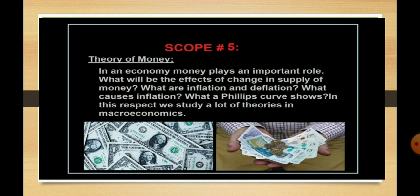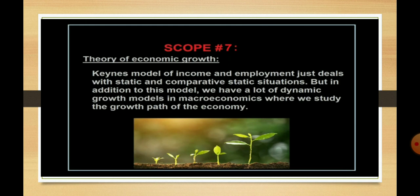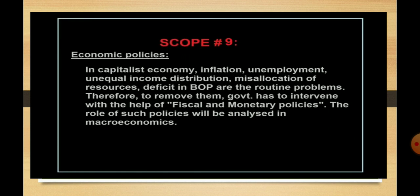In the theory of general price level, we learn about the inflationary gap and deflationary gap. Theory of economic growth: we have dynamic growth models in macroeconomics where we study the growth path of the economy. Theory of business cycle: here we study what a business cycle is, how many phases it has, what are the reasons that generate a business cycle, and how we can reduce fluctuations in the trade cycle.